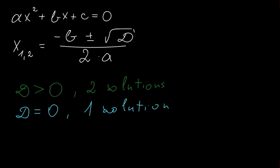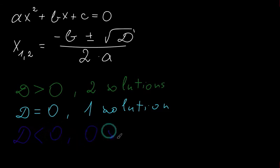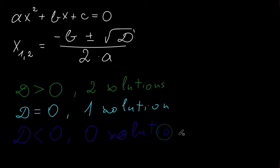And if our discriminant is negative, we have zero solutions. Why? Because we can't take a square root of a negative number.